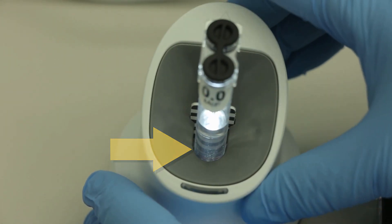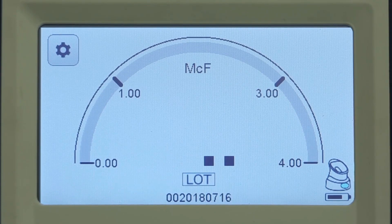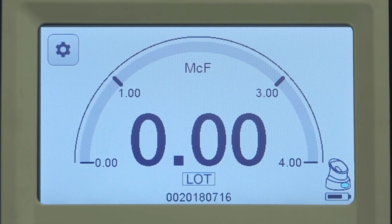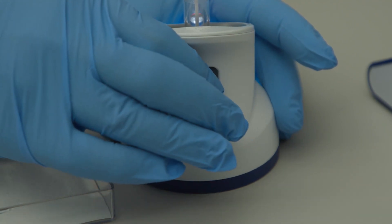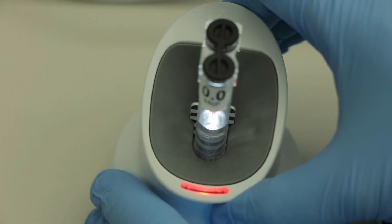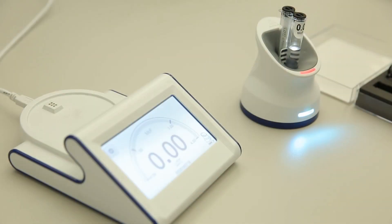Once placed, a McFarlane value along with the lot number of the McFarlane reference displays on the screen. Press and hold the button on the back of the pod until the tube light flashes and the 2-second reading period begins. The value appears as 0.00 on the screen indicating that the pod is zeroed.